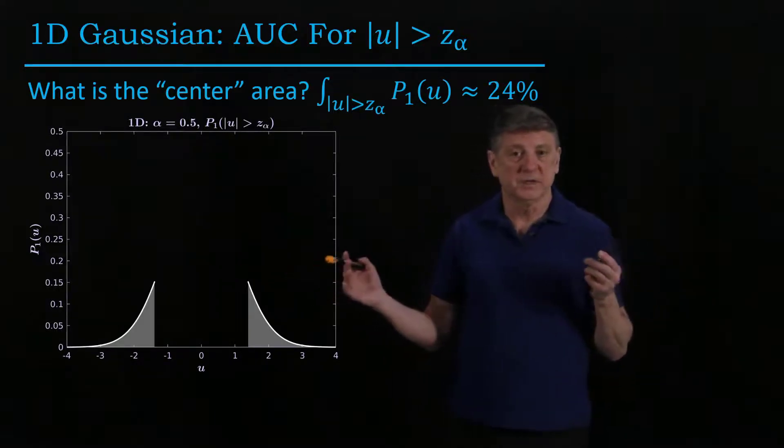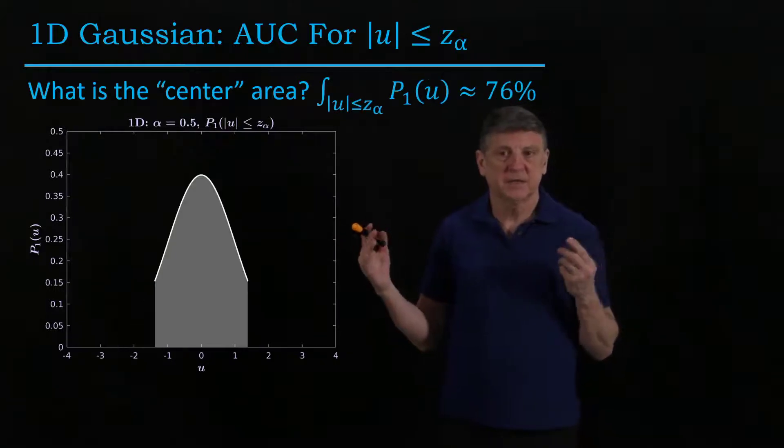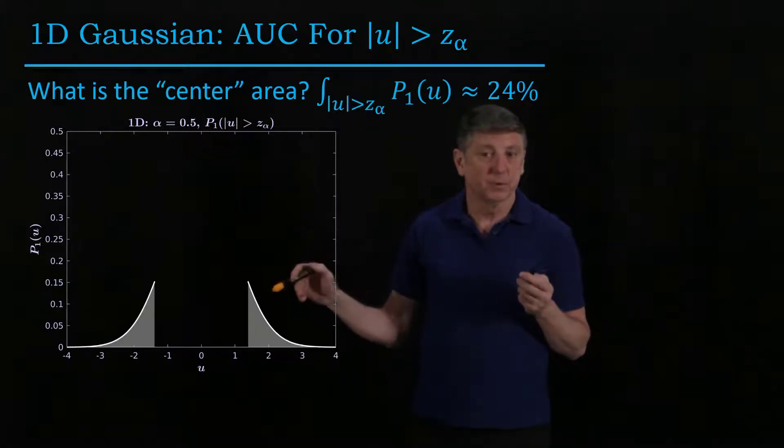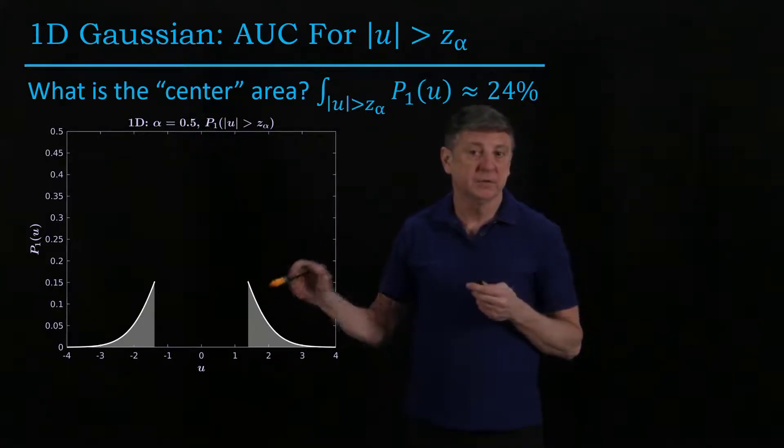So here, what we saw was that 76% of our data are located centrally, and now 24% of our data are in the tails of the distribution.